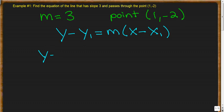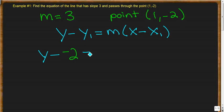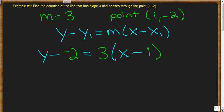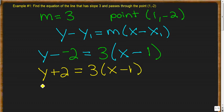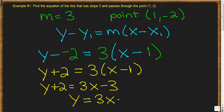We start with y minus our y1 coordinate, which is -2, so we plug in -2. We then plug in our slope, which is 3. The x stays, and we subtract our x1 coordinate, which is 1. Simplifying into slope-intercept form: y + 2 = 3(x - 1), then y + 2 = 3x - 3, and finally y = 3x - 5.